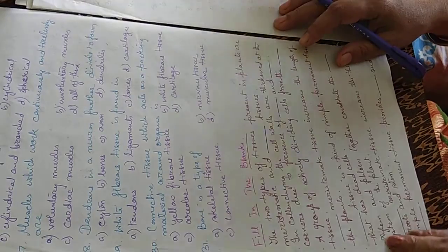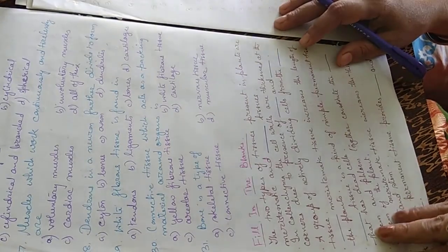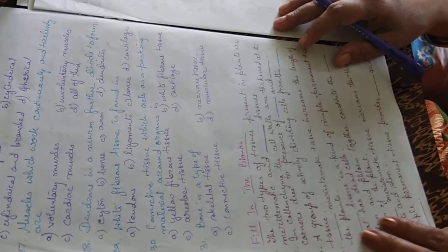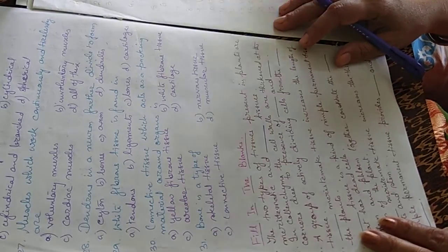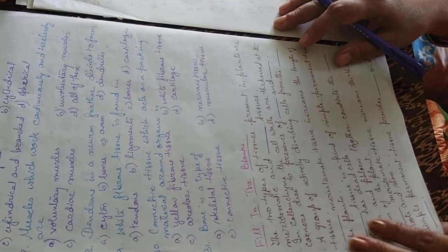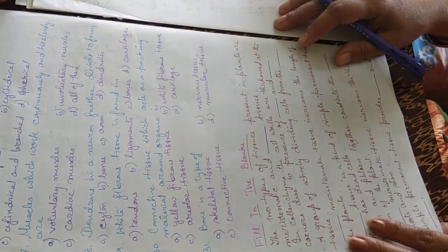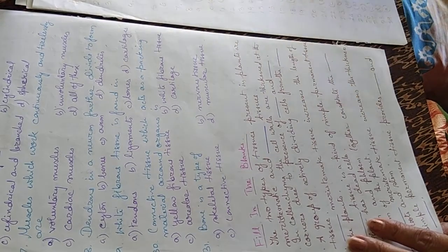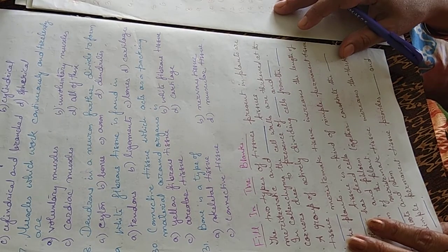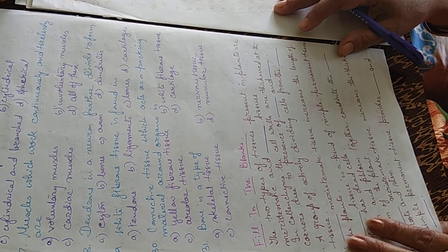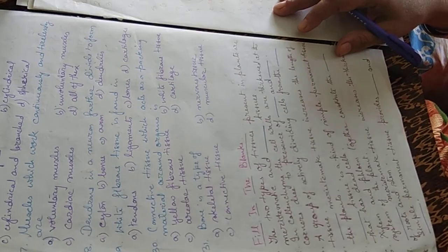Twenty-seventh question: muscles which work continuously and tirelessly are voluntary muscles, involuntary muscles, cardiac muscles, or all of these. The answer is C — the cardiac muscle, which never takes any rest throughout life.